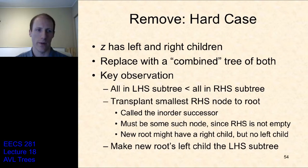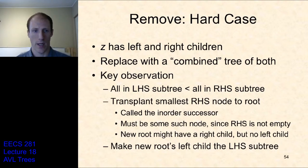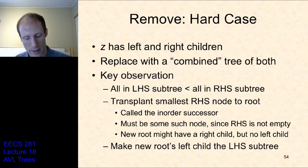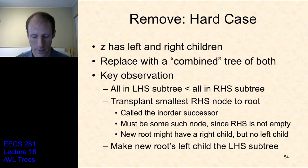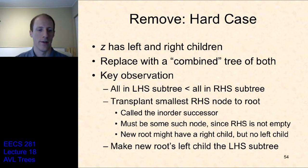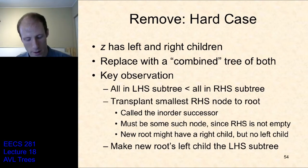The hard case is where the node we are removing has both left and right children. We need to combine the left subtree and the right subtree into one tree so we have one node at the top to replace z. All keys in the left subtree are less than all keys in the right subtree. So we need to find the smallest node from the right subtree — we call this the in-order successor — to be the root of this new tree. This is just the minimum value of the right-hand subtree.